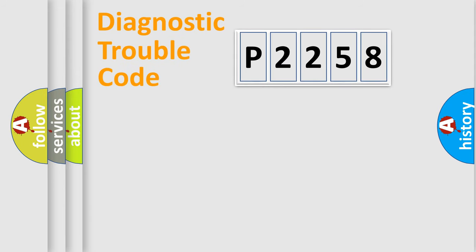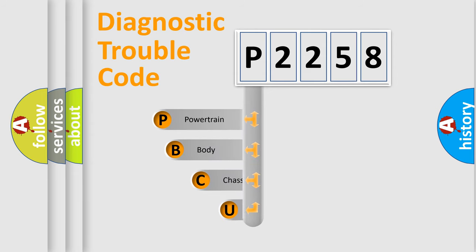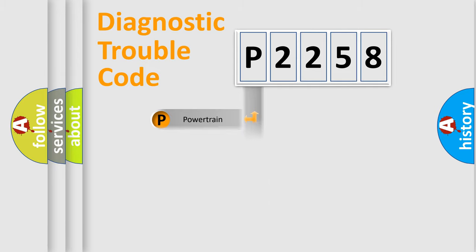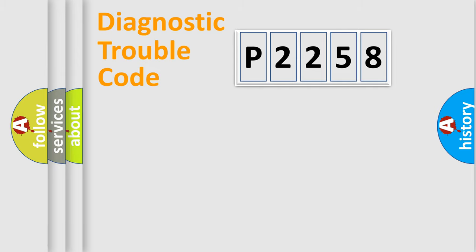Let's do this. First, let's look at the history of diagnostic fault code composition according to the OBD2 protocol, which is unified for all automakers since 2000. We divide the electric system of the automobile into four basic units: Powertrain, Body, Chassis, and Network.